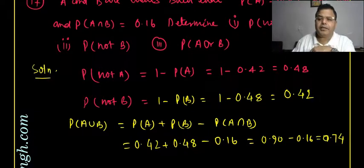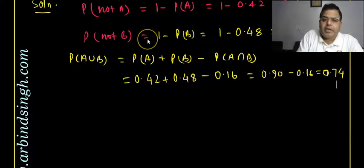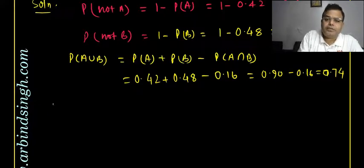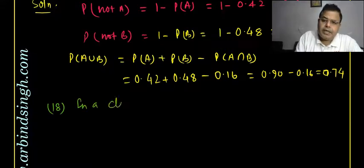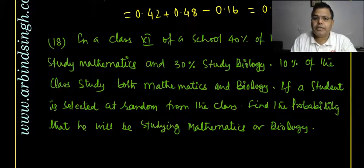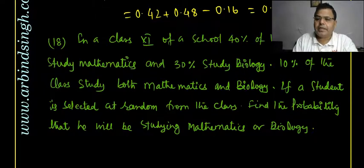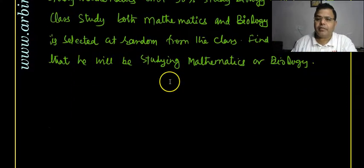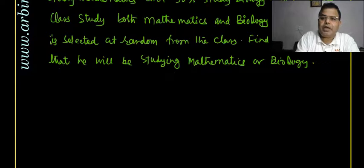Question 18: in a class of students in a school, 40% study mathematics and 30% study biology, and 10% study both mathematics and biology. A student is selected at random. Find the probability that the student studies mathematics or biology.